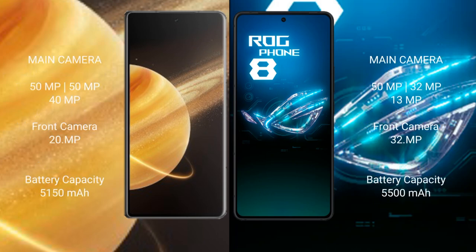Honor Magic V3 features a triple rear camera setup of 50MP, 50MP, and 40MP, with a 200MP front camera. Asus ROG Phone 8 features a triple camera setup of 50MP, 30MP, and 30MP, with a 32MP front camera.